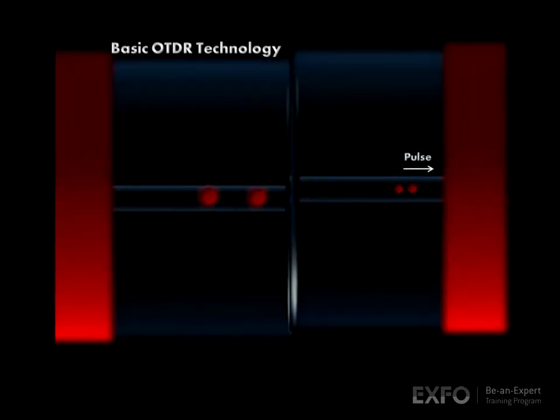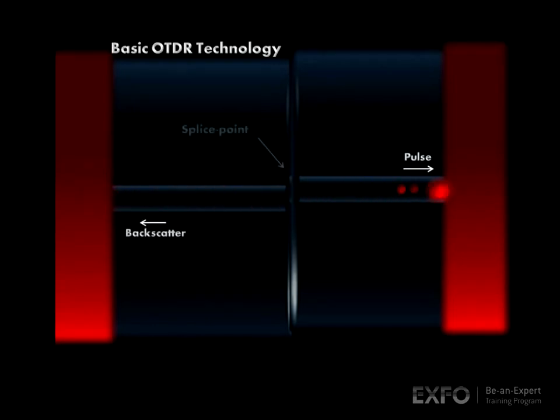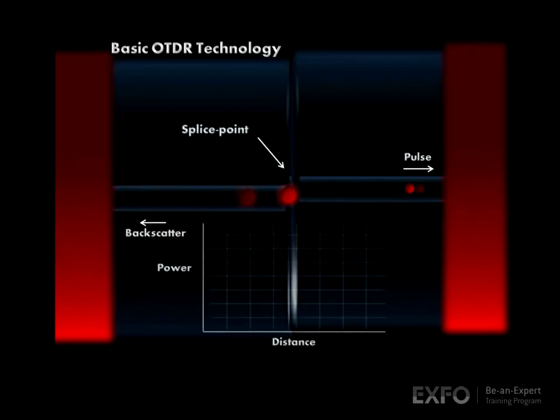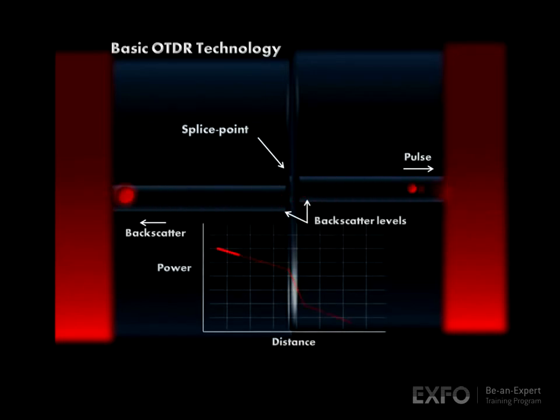One main function of an OTDR is to accurately measure splice loss. It does so by measuring the backscatter levels right before and after the splice.